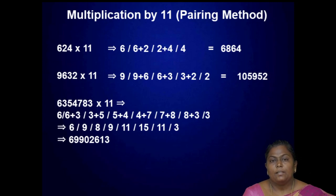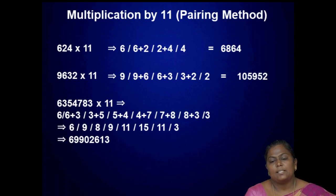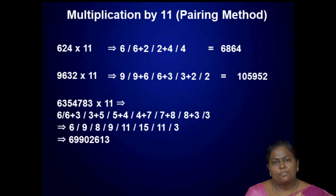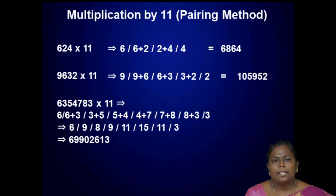For another example, 6357483 into 11. Pair each consecutive pair: 6, then 6 plus 3 is 9, then 3 plus 5 is 8, then 5 plus 4 is 9, then 4 plus 7 is 11, then 7 plus 8 is 15, then 8 plus 3 is 11, and last digit 3.